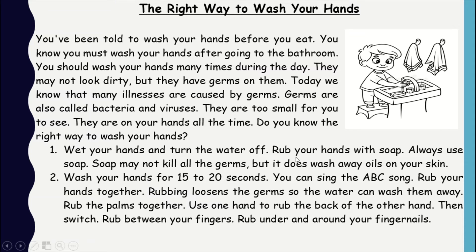One: wet your hands and turn the water off, then rub your hands with soap. Always use soap — soap may not kill all the germs, but it does wash away oils on your skin. Wash your hands for 15 to 20 seconds — you can sing the ABC song. Rub your hands together; rubbing loosens the germs so the water can wash them away. Rub the palms together, use one hand to rub the back of the other hand then switch, rub between your fingers, and rub around your fingernails.